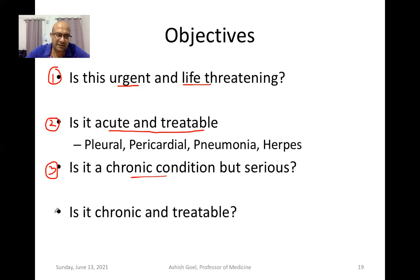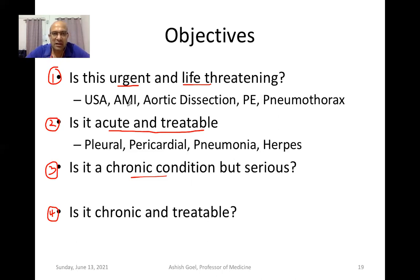Is it urgent and life-threatening? Is it acute but treatable? Is it chronic but serious? Or is it chronic and treatable? In the urgent and life-threatening category we have unstable angina, acute myocardial infarction, aortic dissection, pulmonary embolism, and pneumothorax.